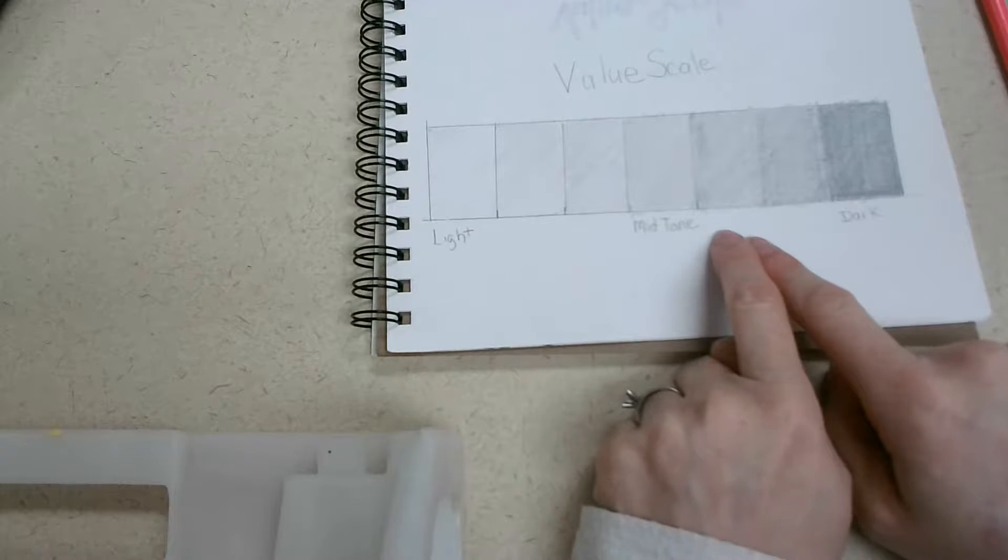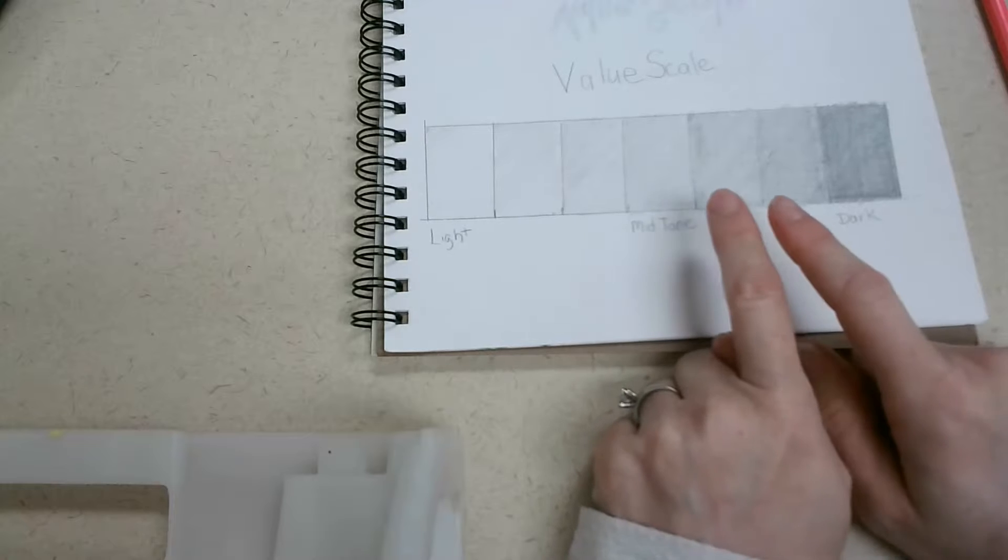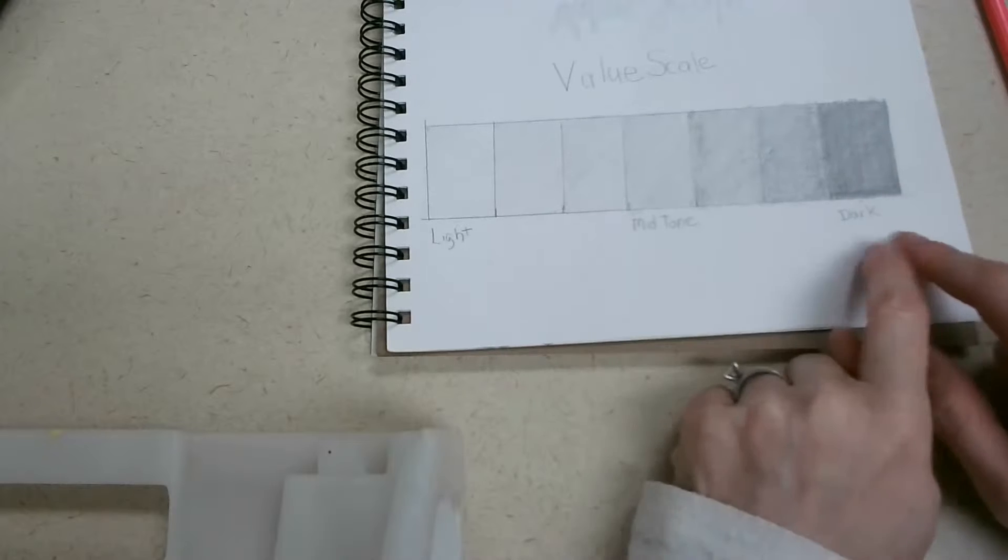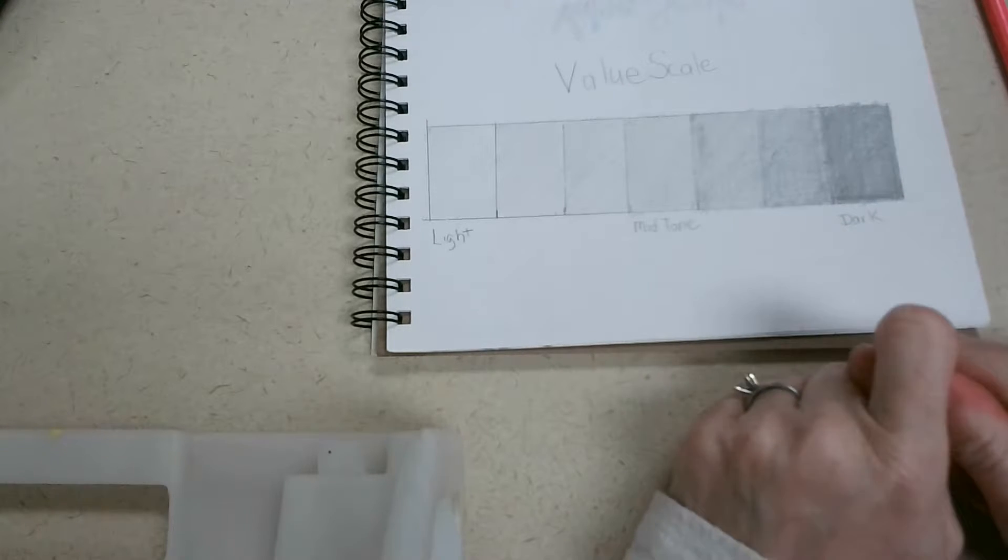And then over on this side, you would add a touch of black to get a little bit darker, another touch of black to get a little darker, and the last one would have more black.